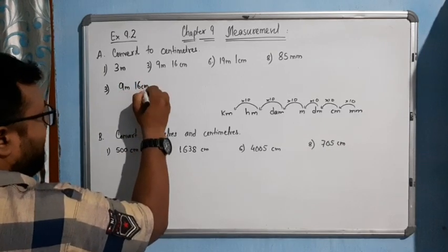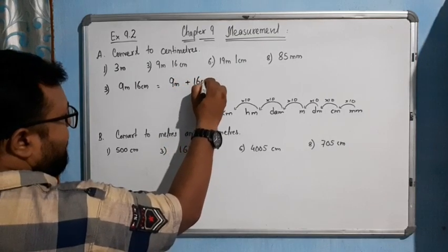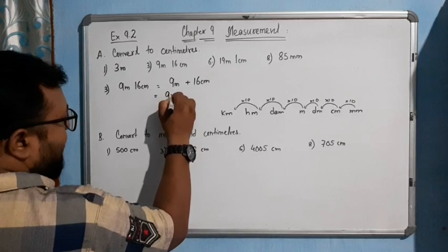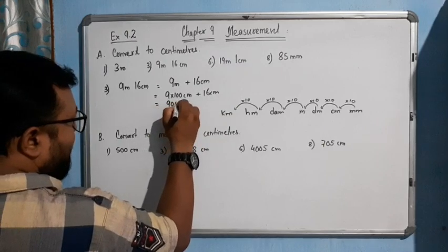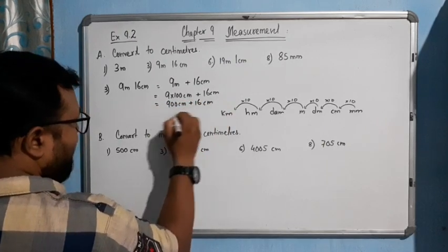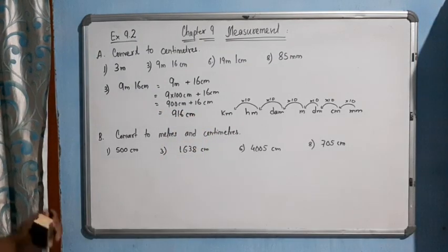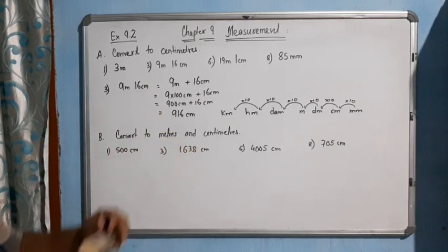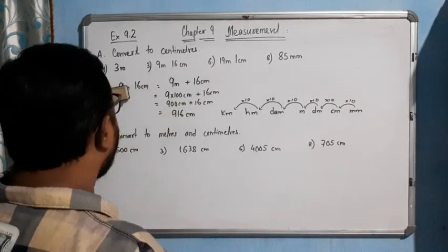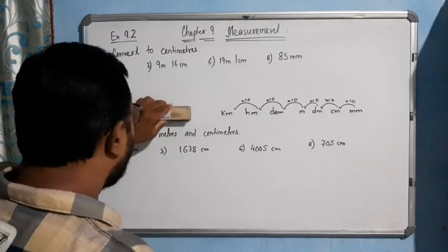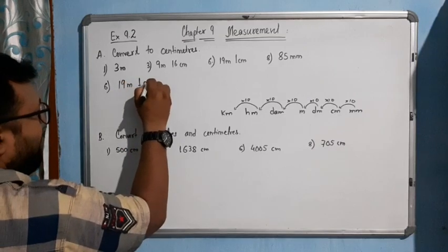Now the third question: 9 meters and 16 centimeters. We write this as 9 meters plus 16 centimeters. 9 meters means 9 into 100 centimeters, which is 900 centimeters, plus 16 centimeters equals 916 centimeters. So 9 meters 16 centimeters gives you 916 centimeters.